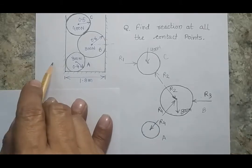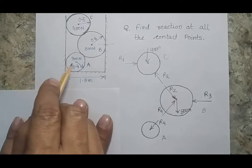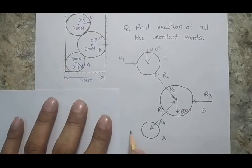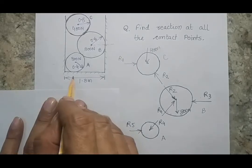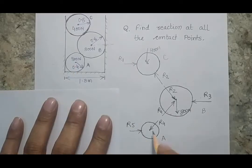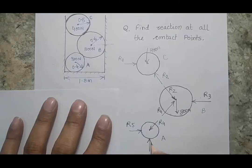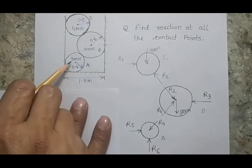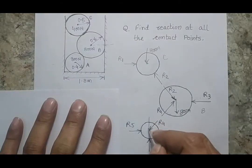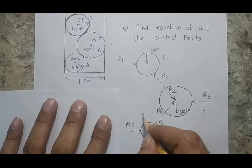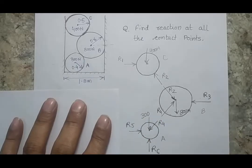For cylinder A, one force acts from the wall toward the center — this is R5. One force acts from the ground on the cylinder — this is R6. The weight of cylinder A acts downward with a magnitude of 300 N.